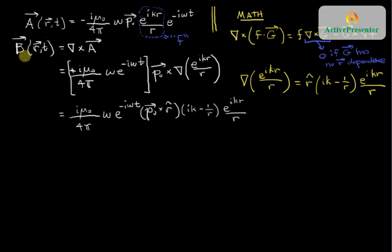Now I can start doing some grouping and let me do that. So I'll copy over the constants from the front. And I'll write this omega. I'll now take the ik minus 1 over r and I'll put it here.